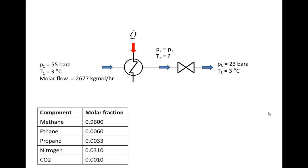The problem consists of the following. There is a stream with the composition listed in the table. It's a mixture of methane, ethane, propane, nitrogen, and CO2 with the shown molar fractions. The main component is methane because it has the highest molar fraction while the others are low. The conditions of pressure and temperature are 55 bar and 3 degrees Celsius, and the stream is flowing with a flow of 2677 kgmol per hour.